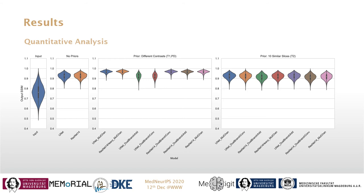The second set of violin plots shows the output of the model without supplying any kind of priors, also known as the baselines.